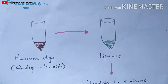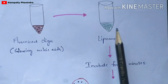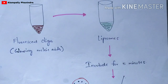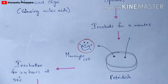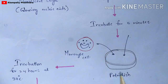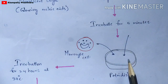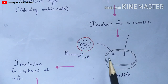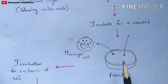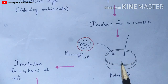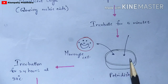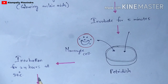After mixing the fluorescent oligos and liposomes in the second cuvette, you incubate the mixture for five minutes. Next, you take a petri dish — also called a petri plate or culture plate — and add this mixture along with monocyte cells or any type of host cells. You then incubate the petri dish for 24 hours at 37 degrees Celsius.